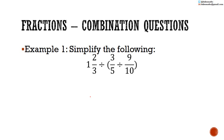BODMAS applies, so we have to work out the brackets first. So 1 and 2 thirds divided by — working out the brackets — 3 over 5, and we multiply by the reciprocal: multiply by 10 over 9.